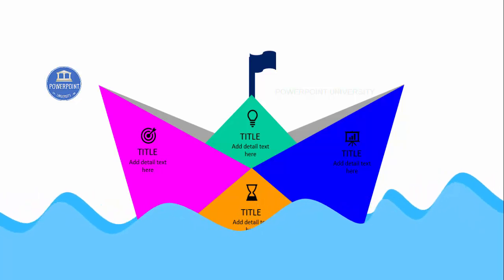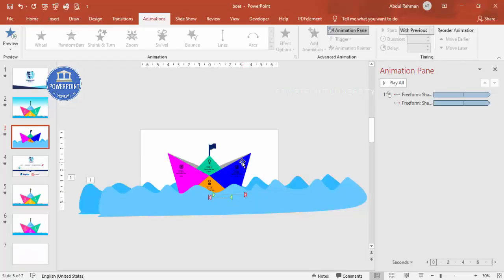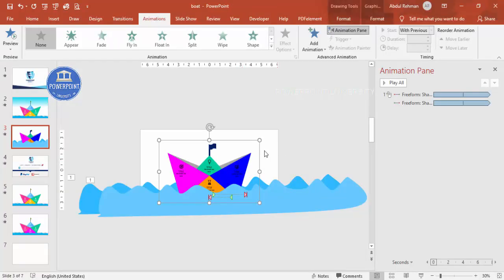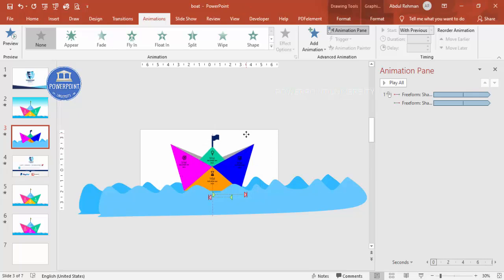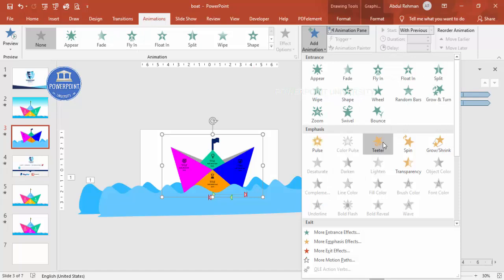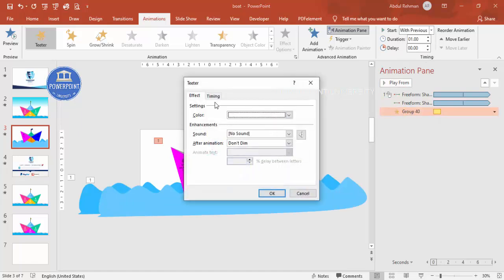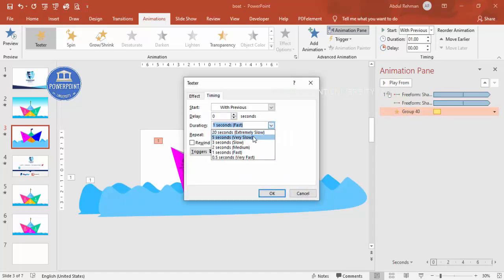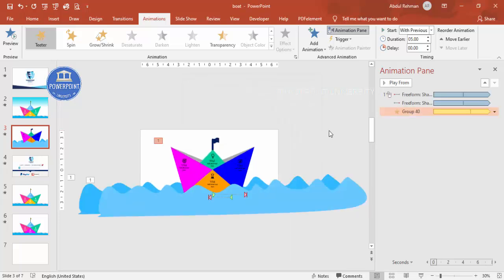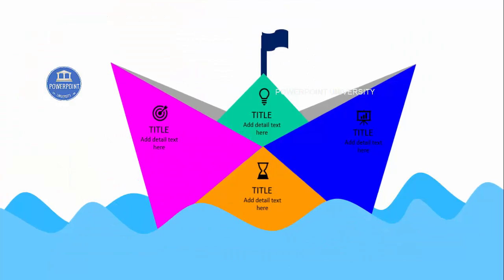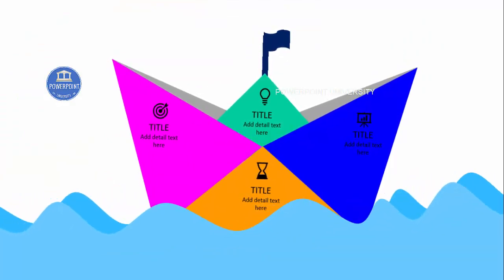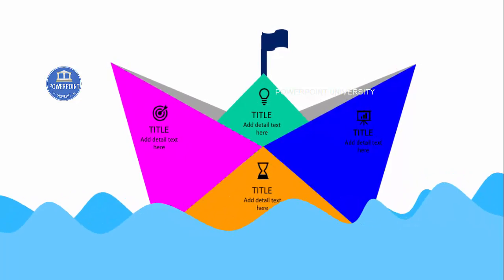For the boat, move it slightly upward and add a Teeter animation effect. Set it to start with previous. Double-click the animation, set the timing to very slow, and repeat until end of slide. Click OK. Now when you click play, the waves animate and the board appears to float on the water.